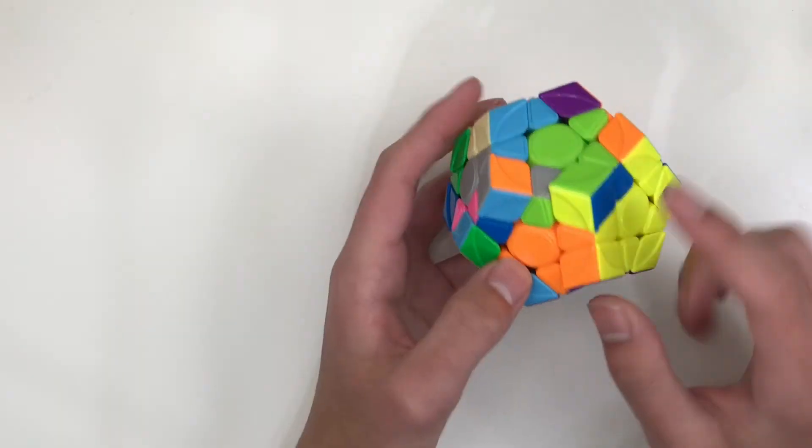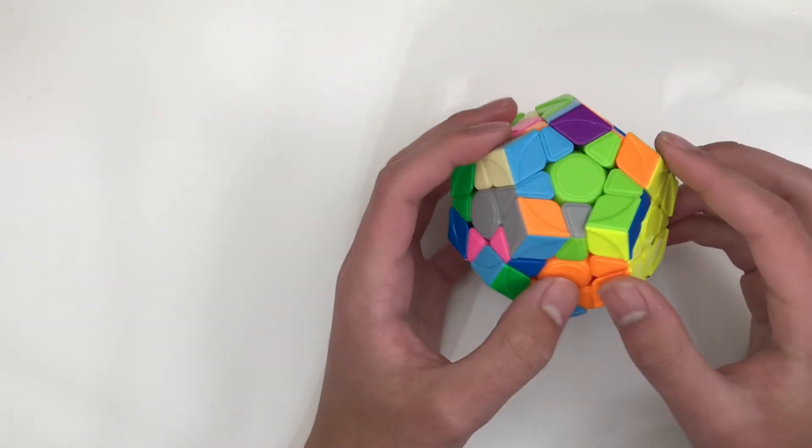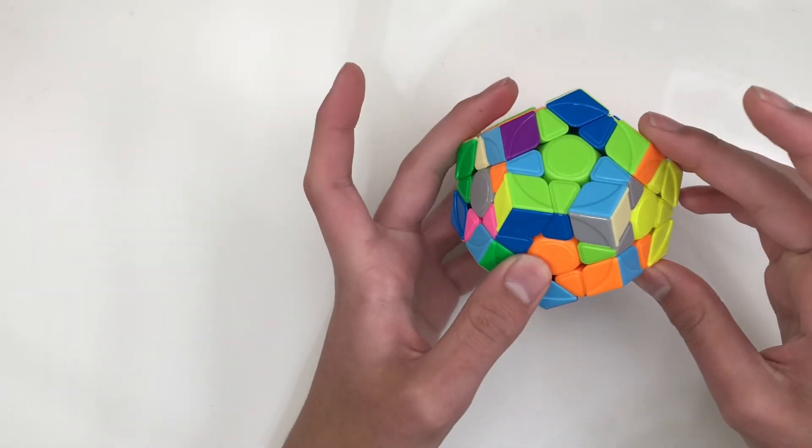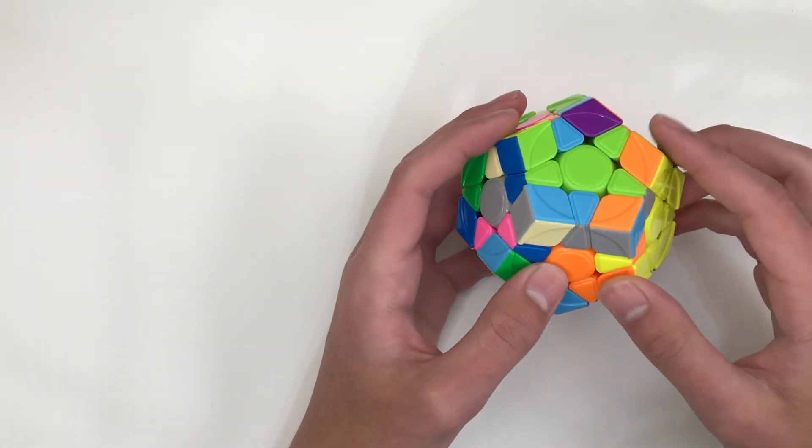So it's still viable to use this alg when this is solved. You just have to remember to cancel and do an R2' and then insert that. So that would look like this.